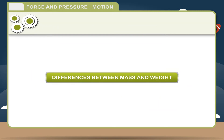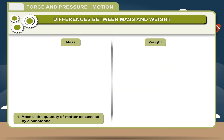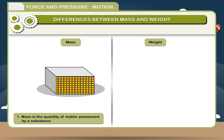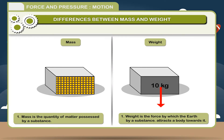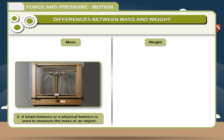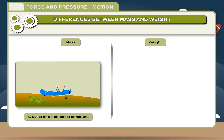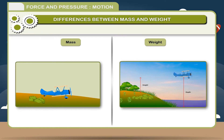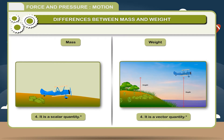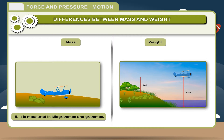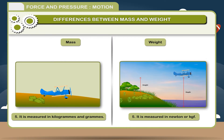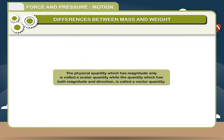Differences between Mass and Weight: 1. Mass is the quantity of matter possessed by a substance; weight is the force by which the earth attracts the body towards it. 2. A beam balance or physical balance is used to measure mass; a spring balance is used to measure weight. 3. Mass of an object is constant; weight changes from place to place. 4. Mass is a scalar quantity; weight is a vector quantity. 5. Mass is measured in kilograms and grams; weight is measured in newtons and kilogram-force. A scalar quantity has magnitude only, while a vector quantity has both magnitude and direction.